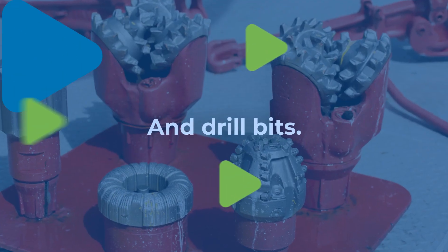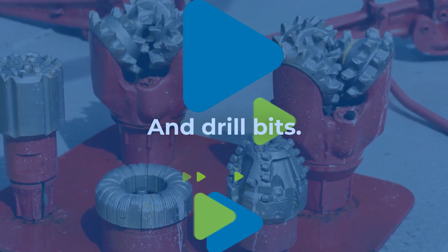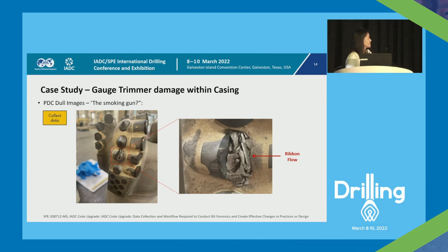And drill bits. It's essentially a cutter pocket in front of a broken cutter. It's filled with metal swath, and when we zoom in and look at the metal swath, we can really see that ribbon flow.